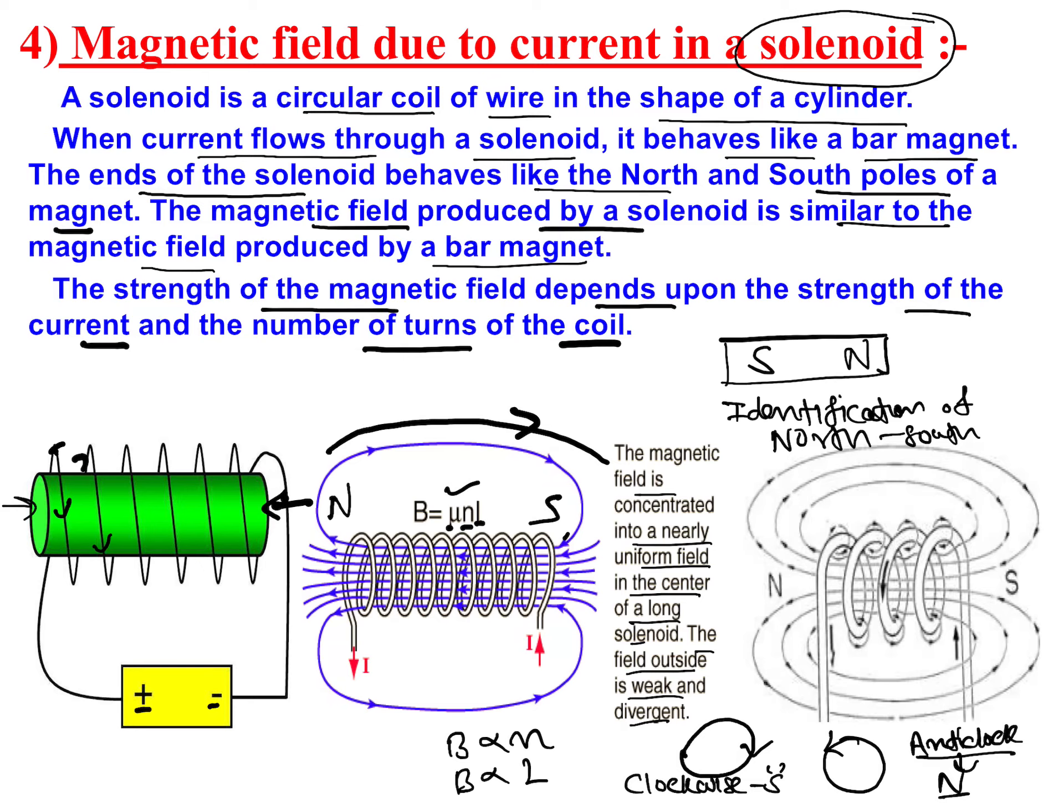So we are clear so far. How does a solenoid behave? It behaves like a bar magnet. Magnetic field lines will be like a bar magnet. They emerge from the north pole and end at the south pole, and inside the magnet they go from south to north. Just like here, south to north inside, and outside north to south. This is just like our bar magnet.